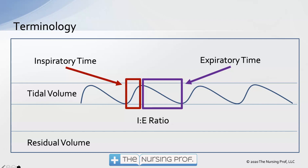Another important term is the inspiratory-expiratory ratio. Looking at a normal tidal volume breath, there is a sharp upsweep in inspiratory time, then a longer, more gradual expiratory time as it rolls out. So inspiratory time is considerably shorter than expiratory time. The inspiratory-expiratory ratio is the amount of time for inspiration versus expiration. When setting up a ventilator, we don't want to deliver another breath on top of that expiration, which is why knowing and setting this ratio is important.